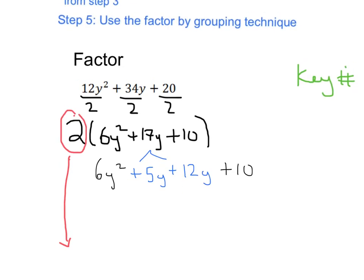And then if you take a look up here in step 5, it says step 5 is to use the factor by grouping technique. So I'm going to group my first two terms together, I'm going to group my second two terms together.